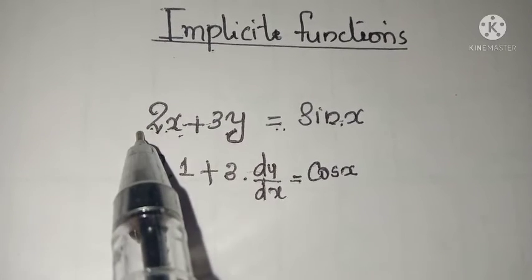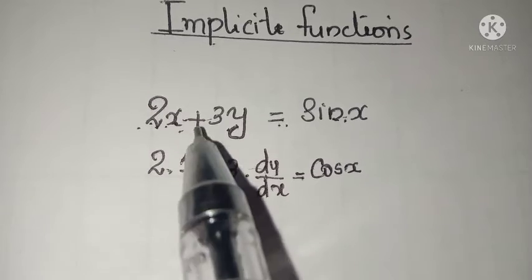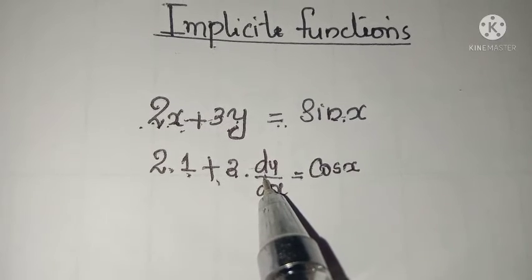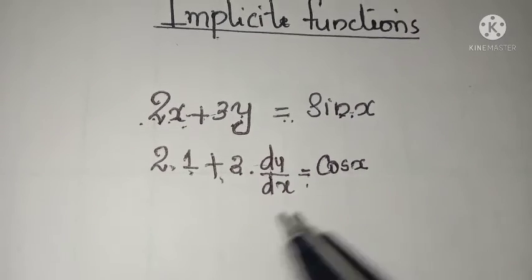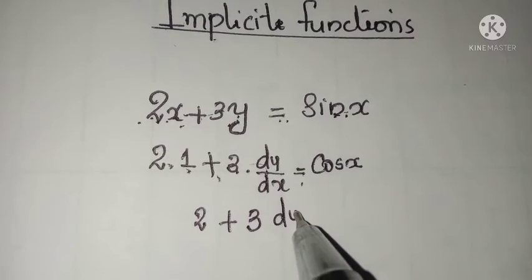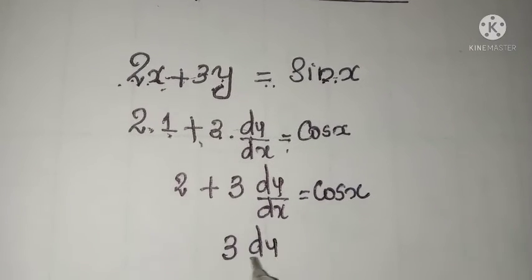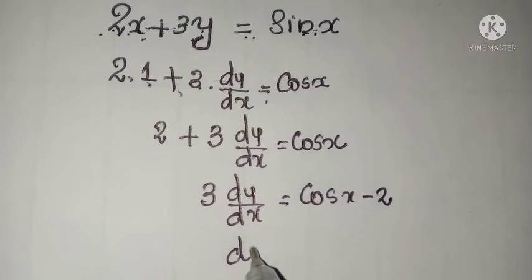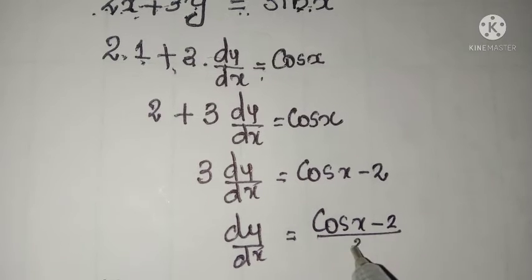2 is a constant, so 2 into derivative of x with respect to x is 1, plus 3 is a constant, so 3 into derivative of y with respect to x is dy by dx, equal to derivative of sin x, that is cos x. On simplification, 2 plus 3 dy by dx equals cos x, so dy by dx equals cos x minus 2 divided by 3.